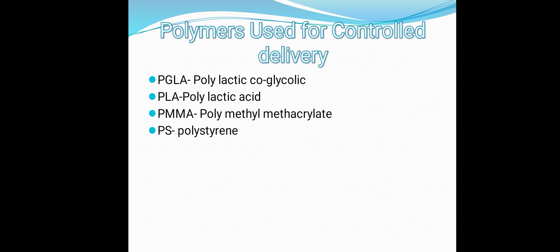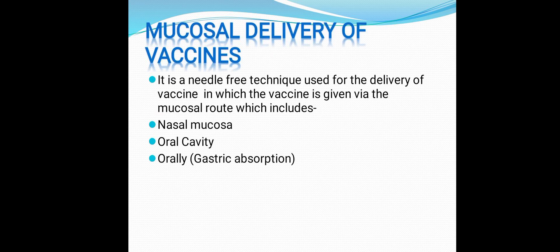What are the polymers used in controlled delivery? Mainly four types are used: PGLA (polylactic-co-glycolic acid), PLA (polylactic acid), PMMA (polymethyl methacrylate), and PS (polystyrene). In controlled delivery of vaccines, the first type is mucosal delivery.